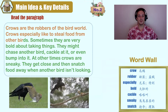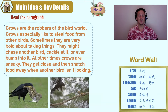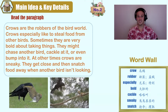Crows are the robbers of the bird world. Crows especially like to steal food from other birds. Sometimes they are very bold about taking things — they might chase another bird, cackle at it, or even bump into it. At other times, crows are sneaky. They get close and then snatch food away when another bird isn't looking.